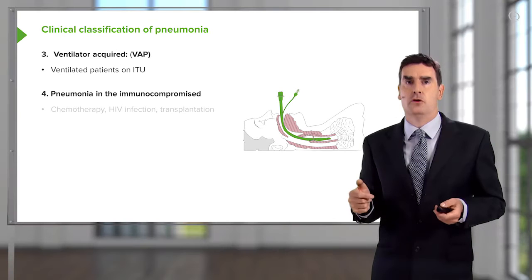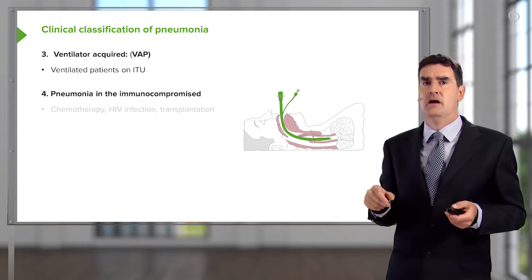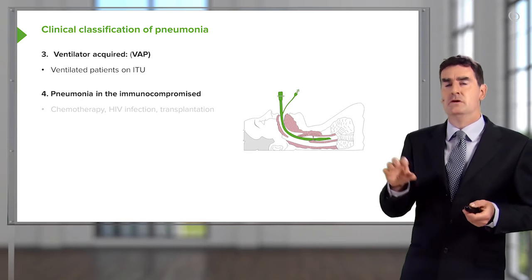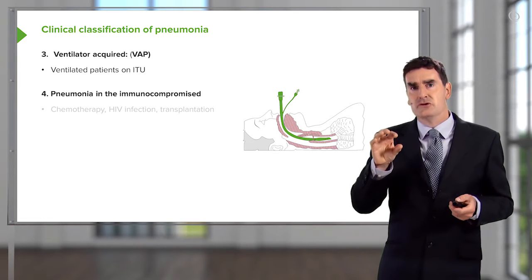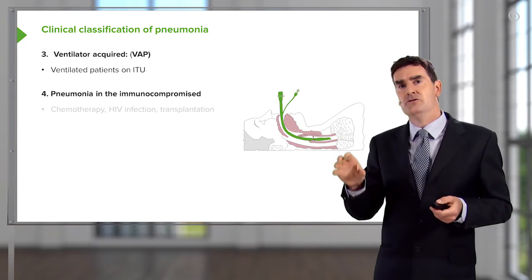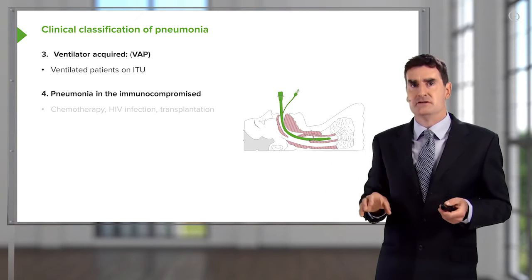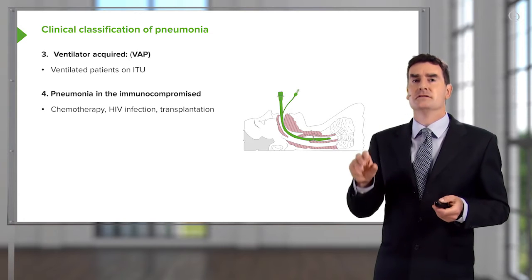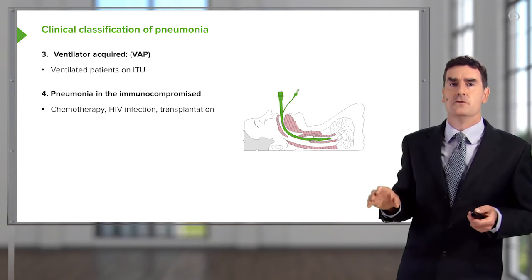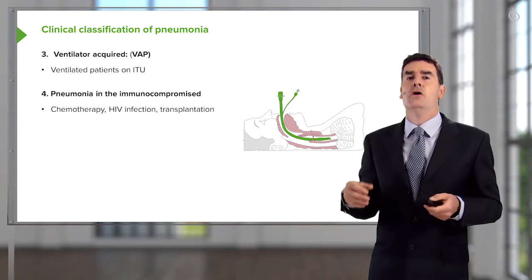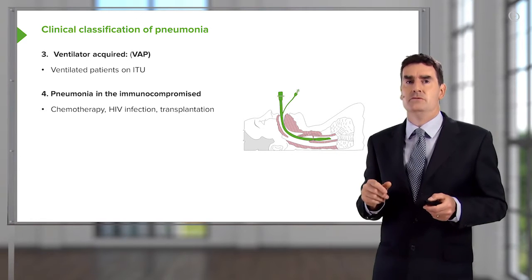The last category is the immunocompromised host. These are patients with a very severe defect to their immune system, which allows a range of unusual organisms — bacteria, viruses, and fungi — to cause pneumonia. The chance of pneumonia from an unusual organism is much higher in these patients. This includes those who've had chemotherapy for cancer, those with HIV infection with poor CD4 counts, and those who have had bone marrow, kidney, or lung transplantation.